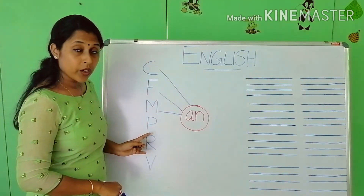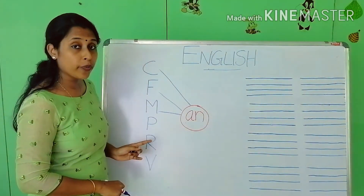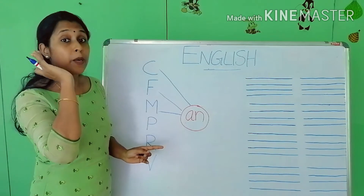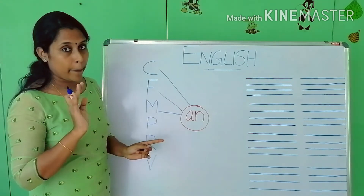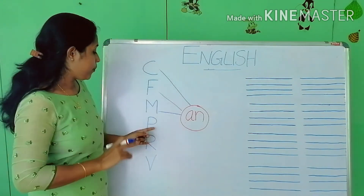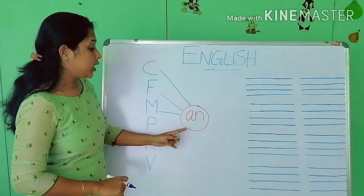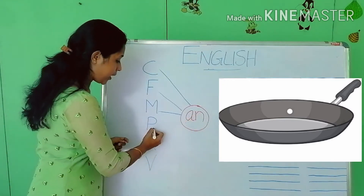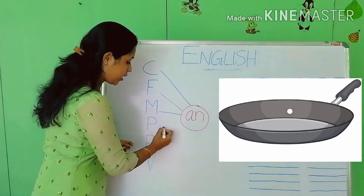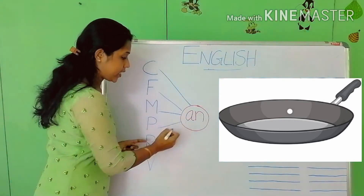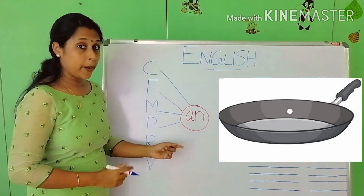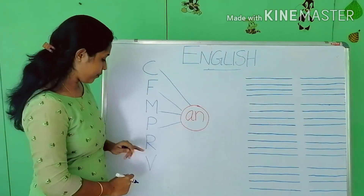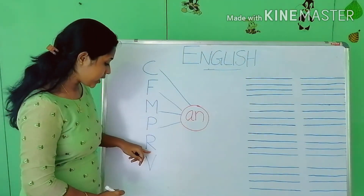Next is P. What is the sound of P? Say it loudly. P. P and AN — 'pan'. P, AN — 'pan'.